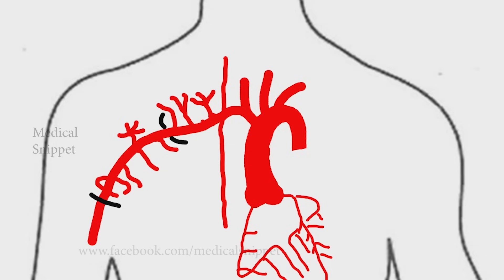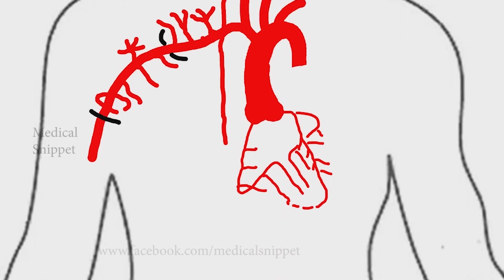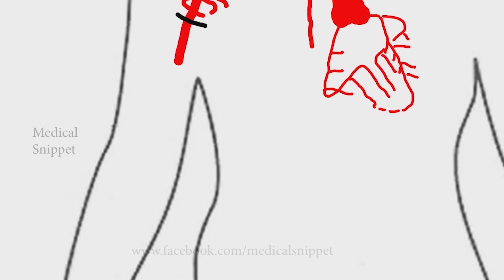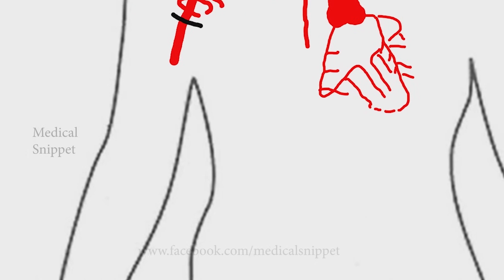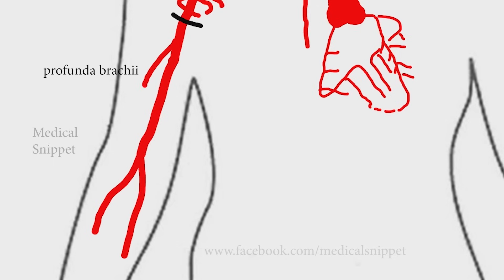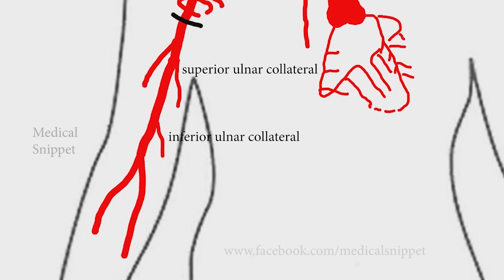The axillary artery continues as the brachial artery from the lower border of the teres major muscle. The brachial artery terminates into the radial and ulnar arteries. It gives rise to the profunda brachii artery, and the superior and inferior ulnar collateral arteries.